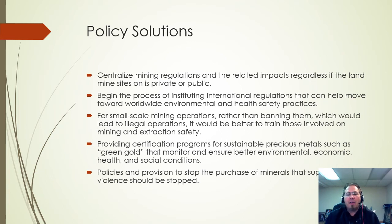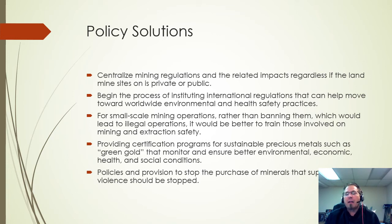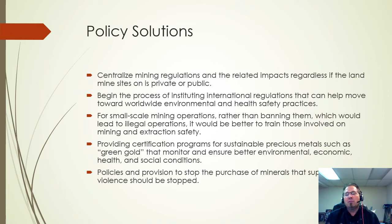Coming back around to blood diamonds — the global market as a whole needs to create policies and provisions to stop the purchase of minerals that support violence. People creating blood diamonds use these conflict minerals to fund civil wars and genocides, and there are markets for them. We need to not only cut off the supply chains but punish the buyers — find the countries purchasing these and hit them with embargoes, trade tariffs, or trade bans. If we catch a country buying these conflict minerals, stop all exports until they can prove they've stopped.